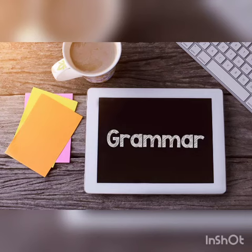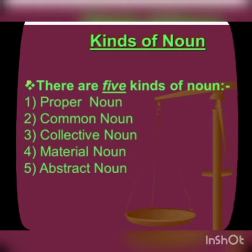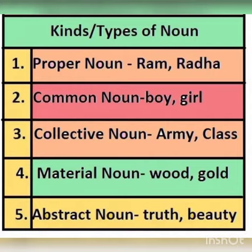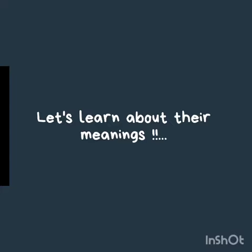Nouns are divided into five kinds, and they are: proper noun, common noun, collective noun, abstract noun, and material noun. Let's know about their meanings.